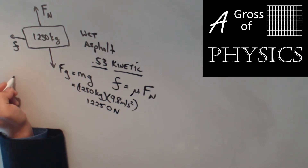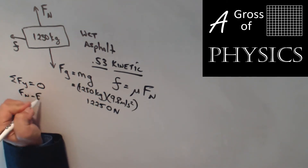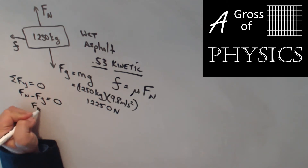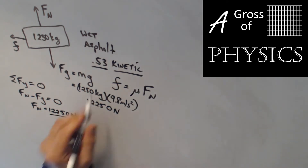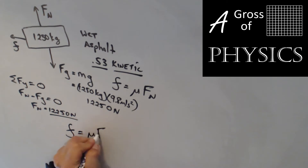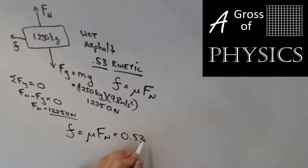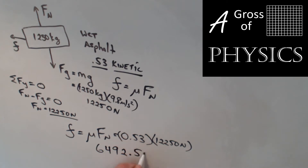Since there is no motion in the y direction, the sum of the forces in y equals zero. Fn minus Fg equals zero, so Fn equals Fg, which is 12,250 newtons. Now we know the normal force and the coefficient of kinetic friction. So friction equals mu times Fn equals 0.53 — remember, no units for the coefficient — times 12,250 newtons, giving us 6,492.5 newtons.